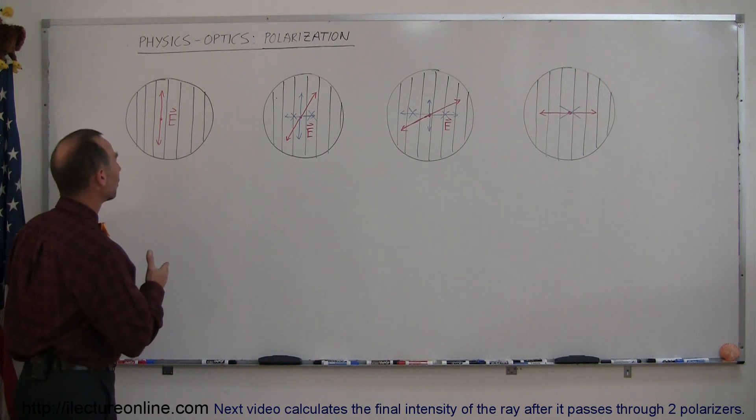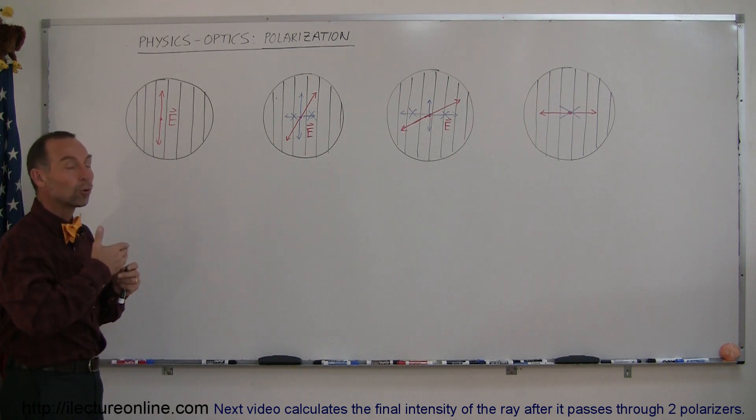Polarizers are devices that allow the electromagnetic radiation to transfer through only in one direction.